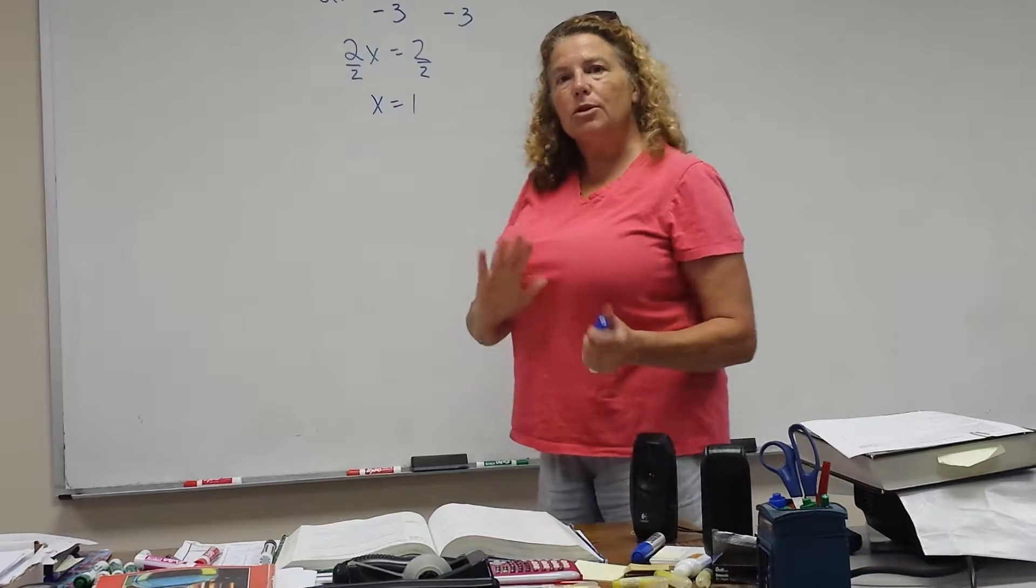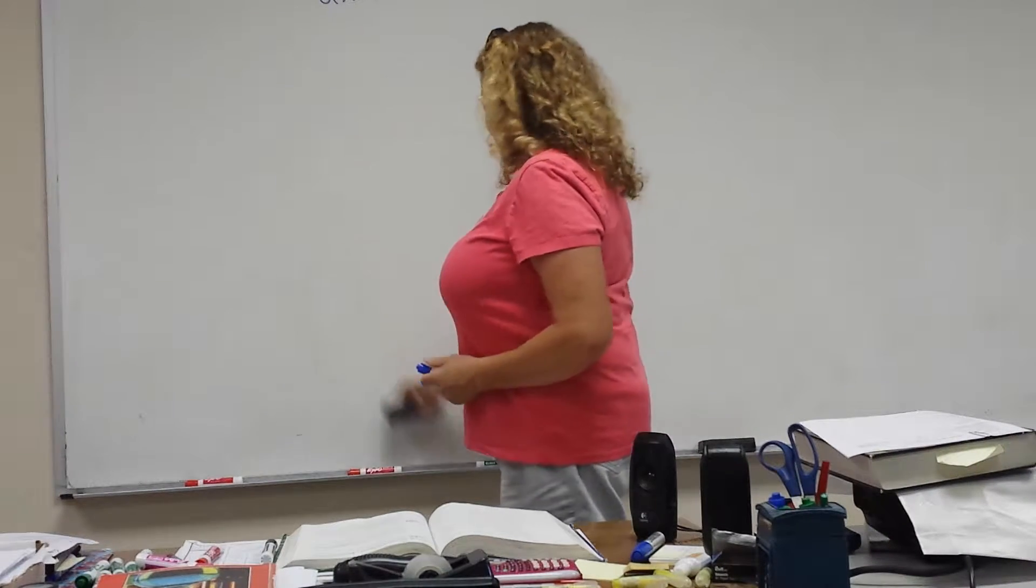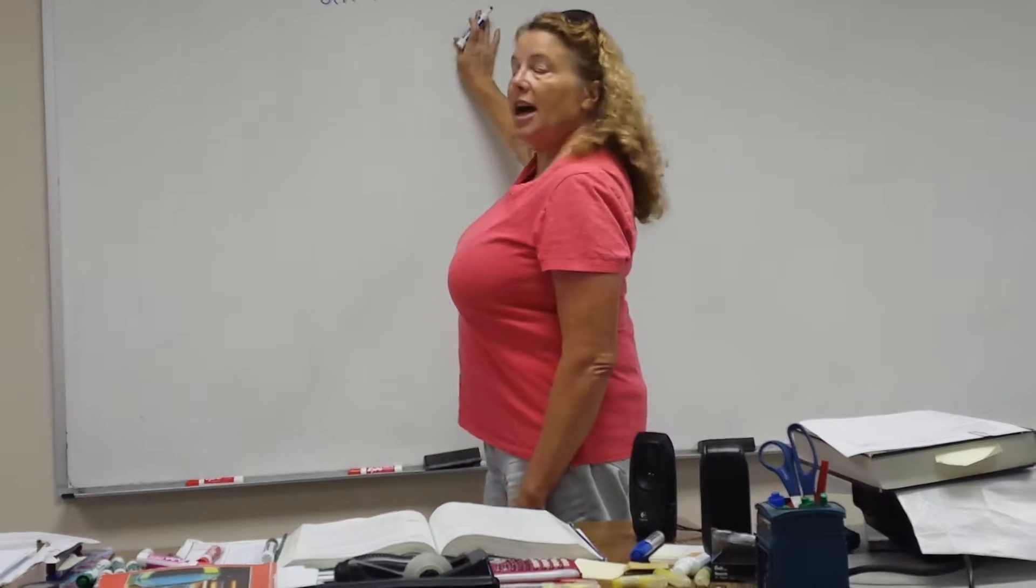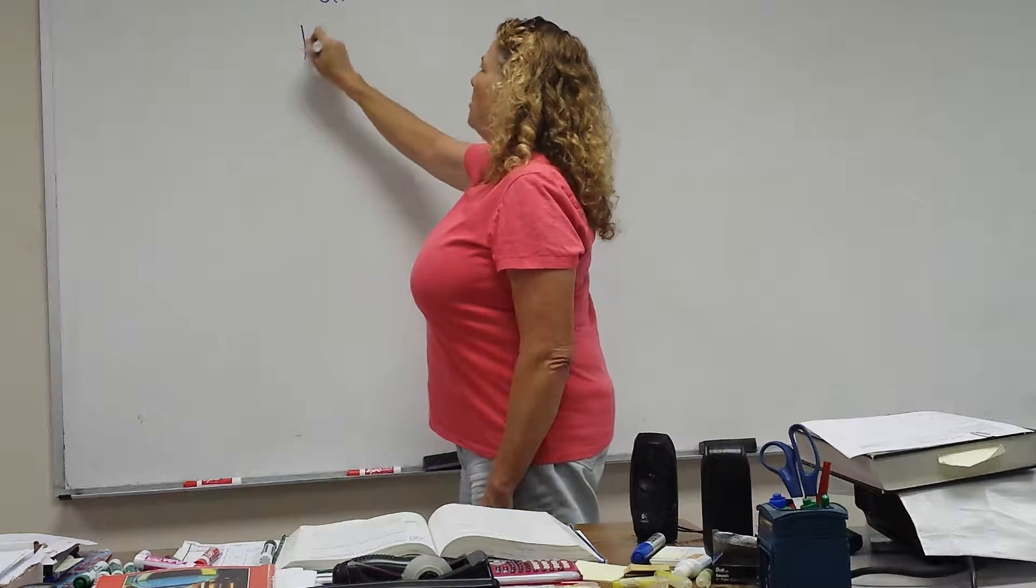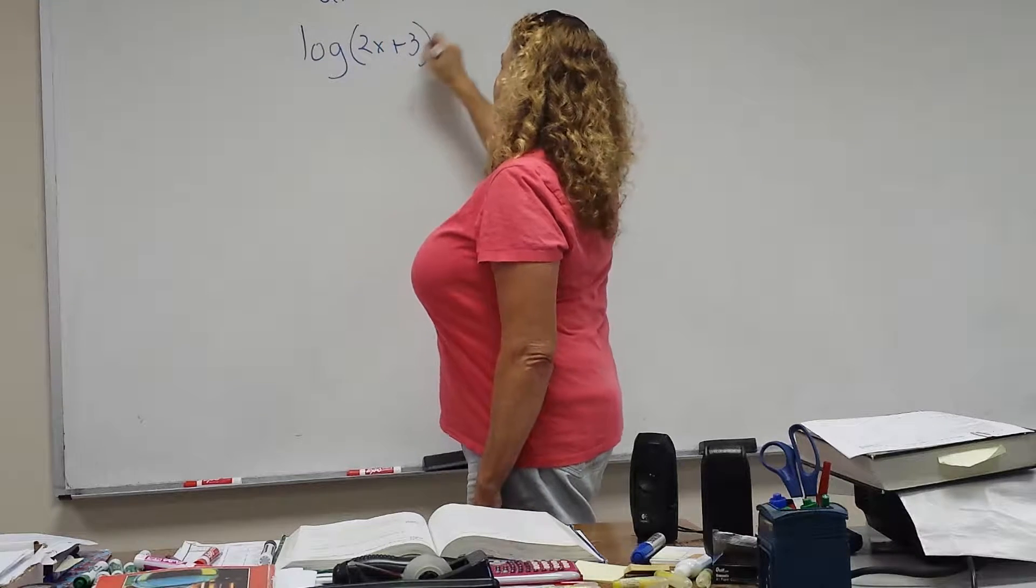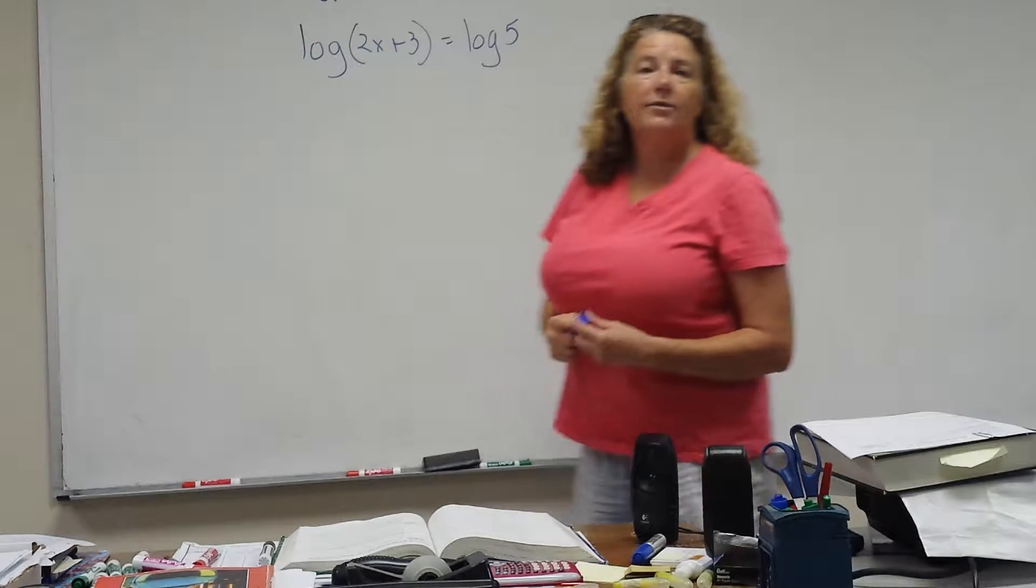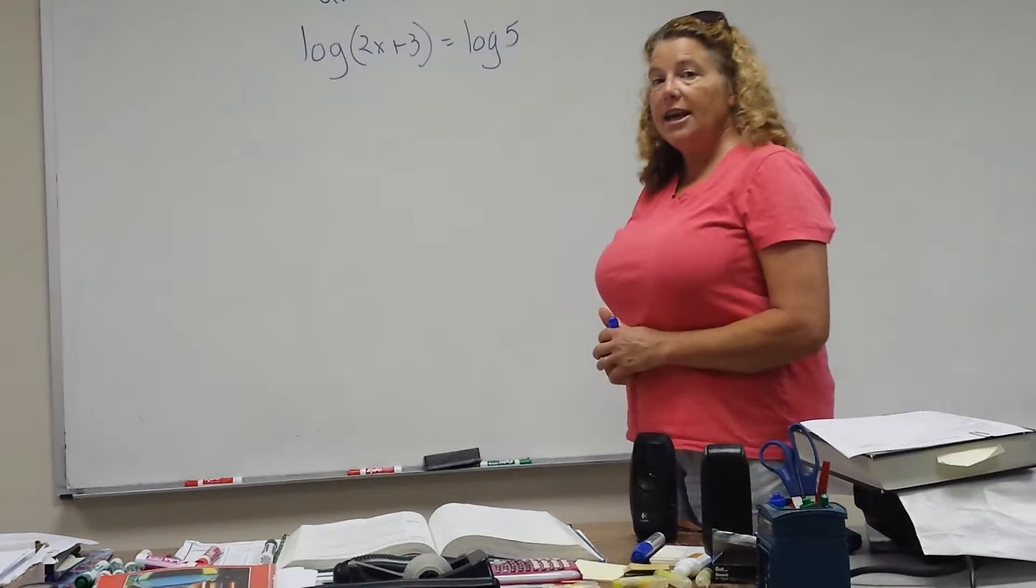Well, it's the same principle with taking the logarithm of. If I were to take the logarithm of each side to solve this equation, I would just write log 2x plus 3 equals log 5. That's perfectly legal. I've done the same thing to both sides. I've taken the logarithm.